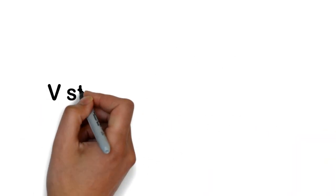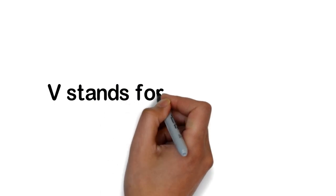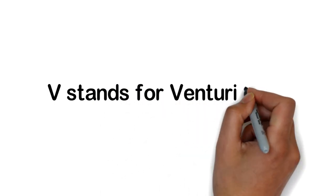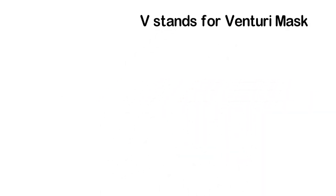V stands for Venturi masks. Venturi masks are masks that provide precise concentrations of oxygen and are available in different colors which provide different concentrations like 40%, 50%, 60%.